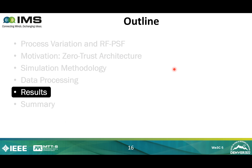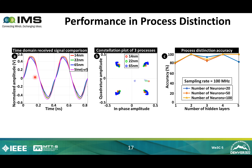Figure A shows the time-domain received signal for three different processes for the fast-fast corner, with the reference signal shown. In the time domain, we can see process-dependent non-idealities. Figure B shows the constellation for the three processes. Although there is some overlapping, they can be visually distinguished. A neural network is trained with the constellation data and tested. Figure C shows the process distinction accuracy for different neural network configurations, with accuracy plotted against the number of hidden layers, and each color representing the number of neurons in each layer.